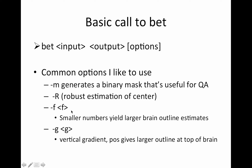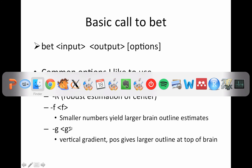Minus F, followed by a number: smaller numbers give a larger brain outline, and bigger numbers give a smaller outline. I've found in the past it helps a little bit, depending on the data. Minus G is a vertical gradient: positive values give a larger outline at the top of the brain, otherwise you get larger at the bottom. These are the flags I typically play around with, but you can look at the BET help to see there are more options.